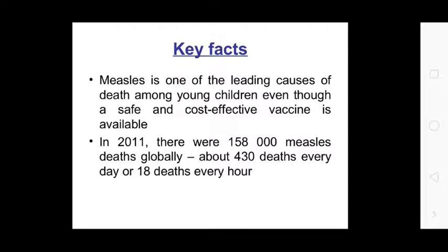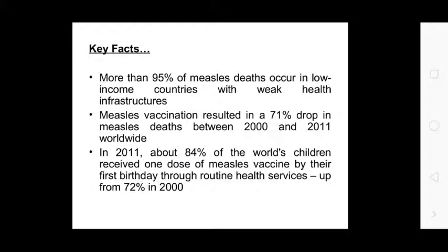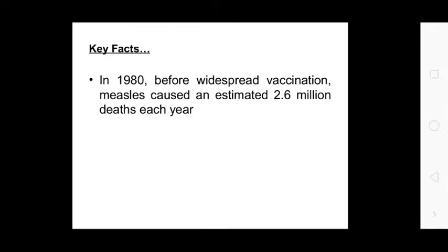Key facts: measles is one of the leading causes of death among young children even though a safe and cost-effective vaccine is available. In 2011 there were 158,000 measles deaths globally — about 430 deaths every day or 18 deaths every hour. More than 95% of measles deaths occurred in low-income countries with weak health infrastructure. Measles vaccination resulted in a 71% drop in measles deaths between 2000 and 2011 worldwide. In 2011 about 84% of the world's children received one dose of measles vaccine by their first birthday, up from 72% in 2000. Before widespread vaccination in 1980, measles caused an estimated 2.6 million deaths each year.